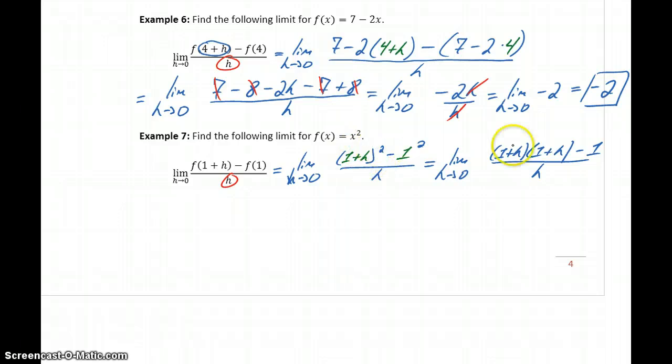To expand out 1 plus h squared, we need to FOIL 1 plus h times 1 plus h. That will give us 1 plus 2h plus h squared minus 1, all over h. 1 minus 1 will cancel.